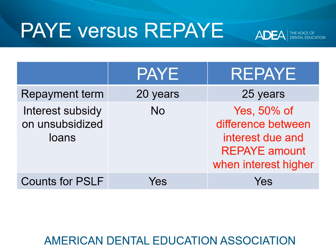Let's suppose that on your student loan portfolio you owe $1,000 a month in interest alone — in other words, you'd have to pay $1,000 a month to keep the debt where it is, not to pay it down but not to let it grow. Let's suppose that your calculated payment amount with REPAY is $300 a month, which is not atypical for someone doing a GPR or a pediatric residency, such as a first-year resident.